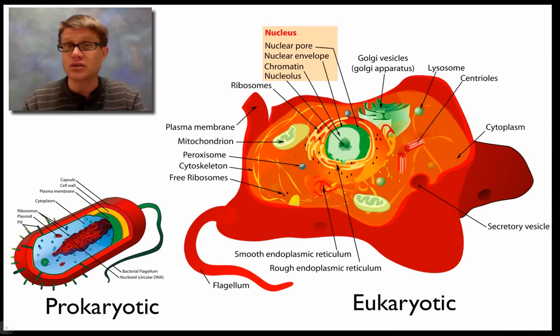First thing you should know is there are two major types of cells. We have what are called prokaryotic cells and then eukaryotic cells. Prokaryotic cells are going to lack a nucleus. They're before the egg if we break down that word. So there's going to be no nucleus. Eukaryotic cells are going to have a nucleus.